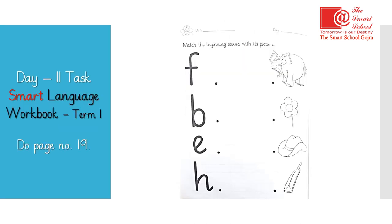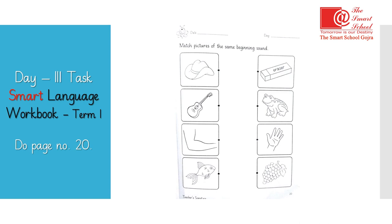This is your day two task. This task should be done in your Smart Language workbook on page 19. You need to match the beginning sound with its picture. This is your day three task. This task should be done in your Smart Language workbook on page 20. You need to match pictures of the same beginning sound.